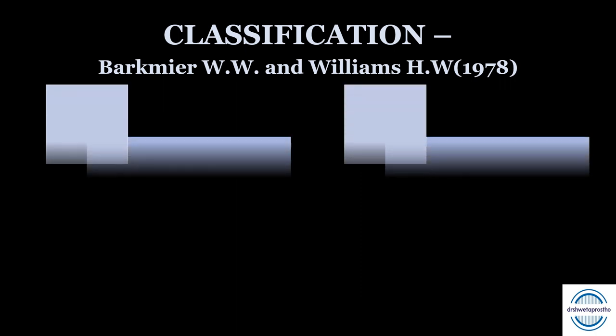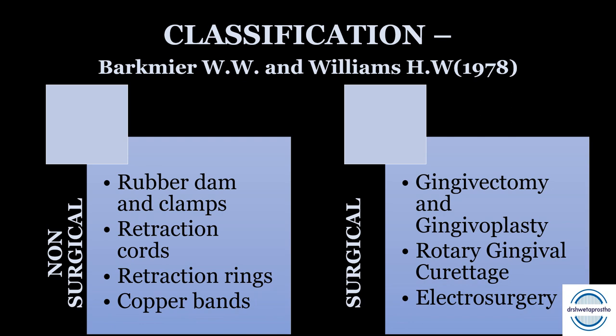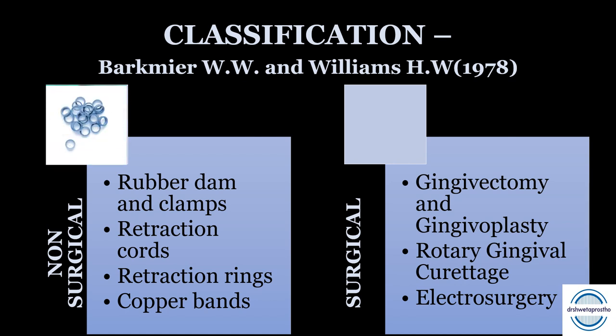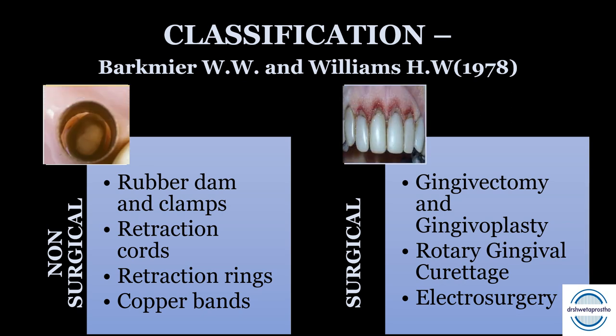How to do gingival displacement? The first classification was given by Backmere and Williams, who divided the methods into two categories: non-surgical and surgical. Non-surgical includes rubber dam and clamps, retraction cords, retraction rings, and copper bands. Surgical includes gingivectomy, gingivoplasty, rotary gingival curettage, and electrosurgery.